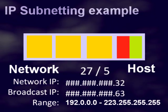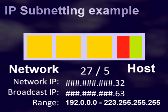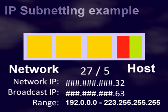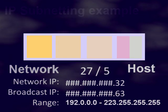So the broadcast IP would end in 31. Then the next network would start from 32, with a broadcast IP of 63.